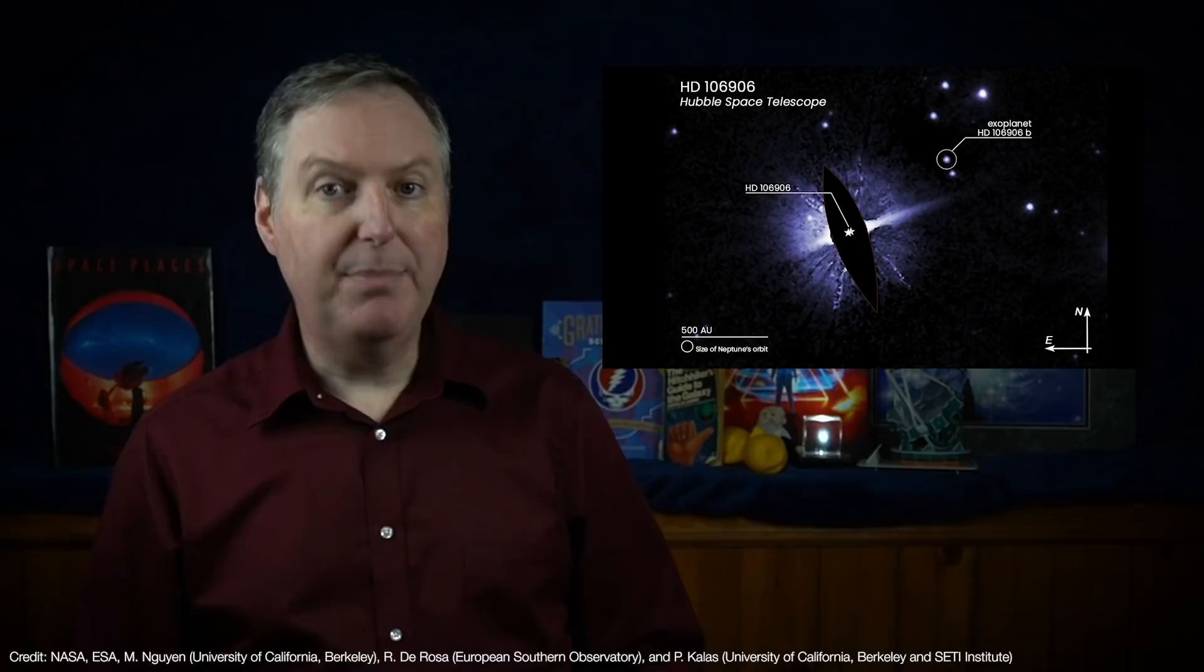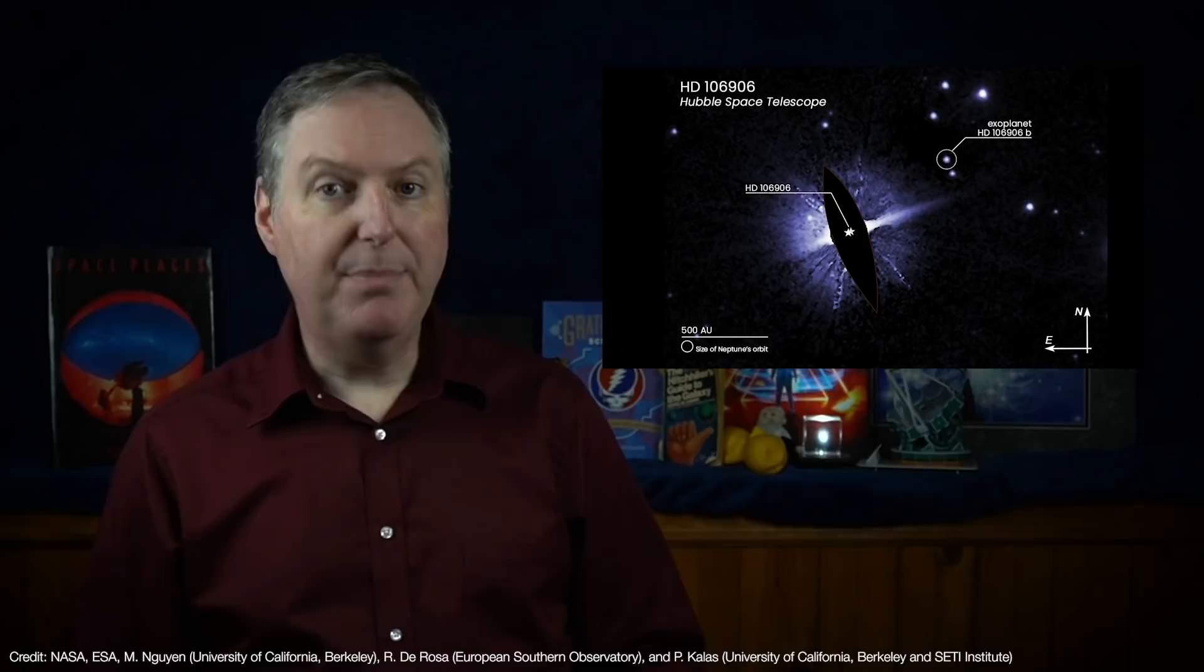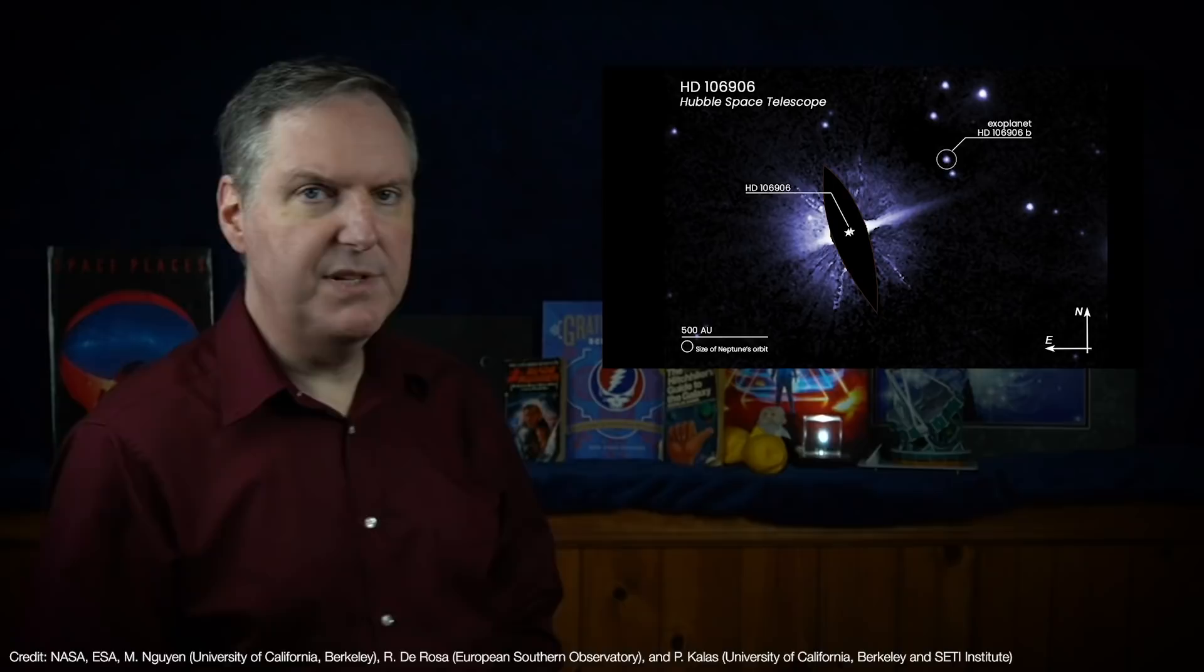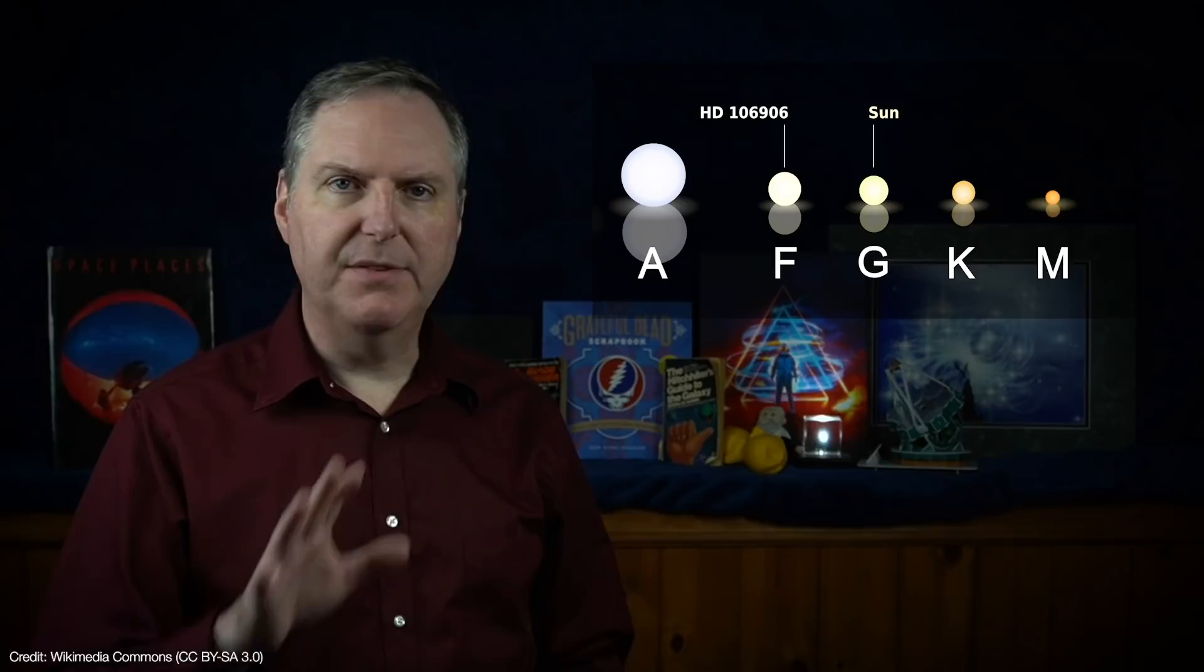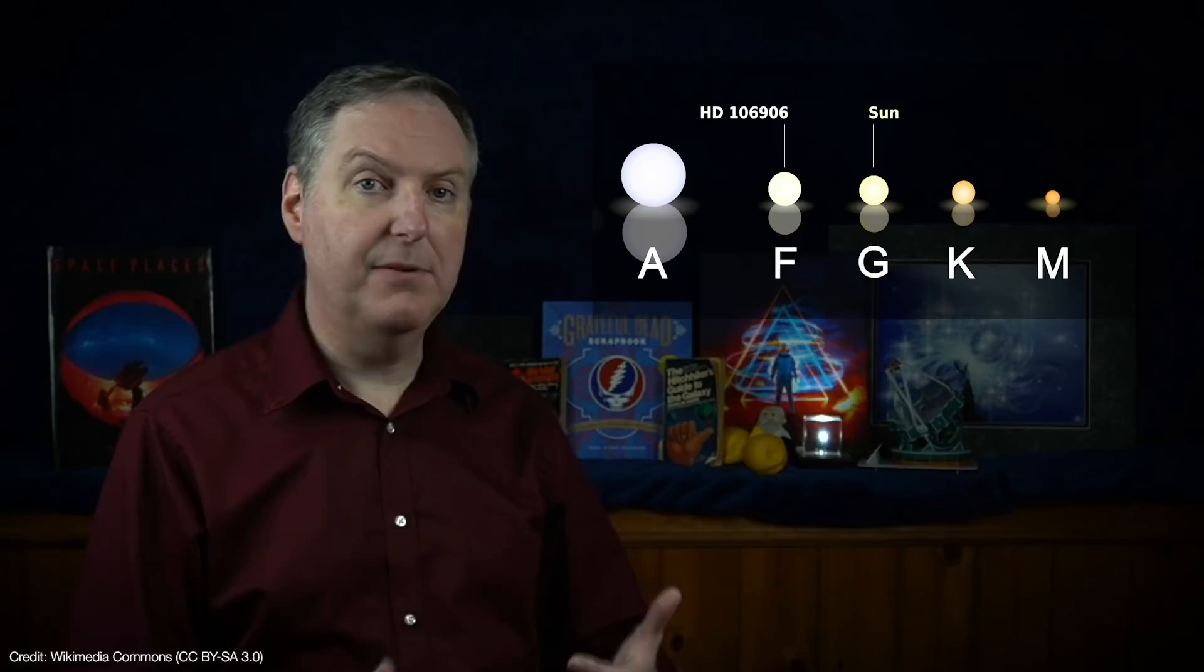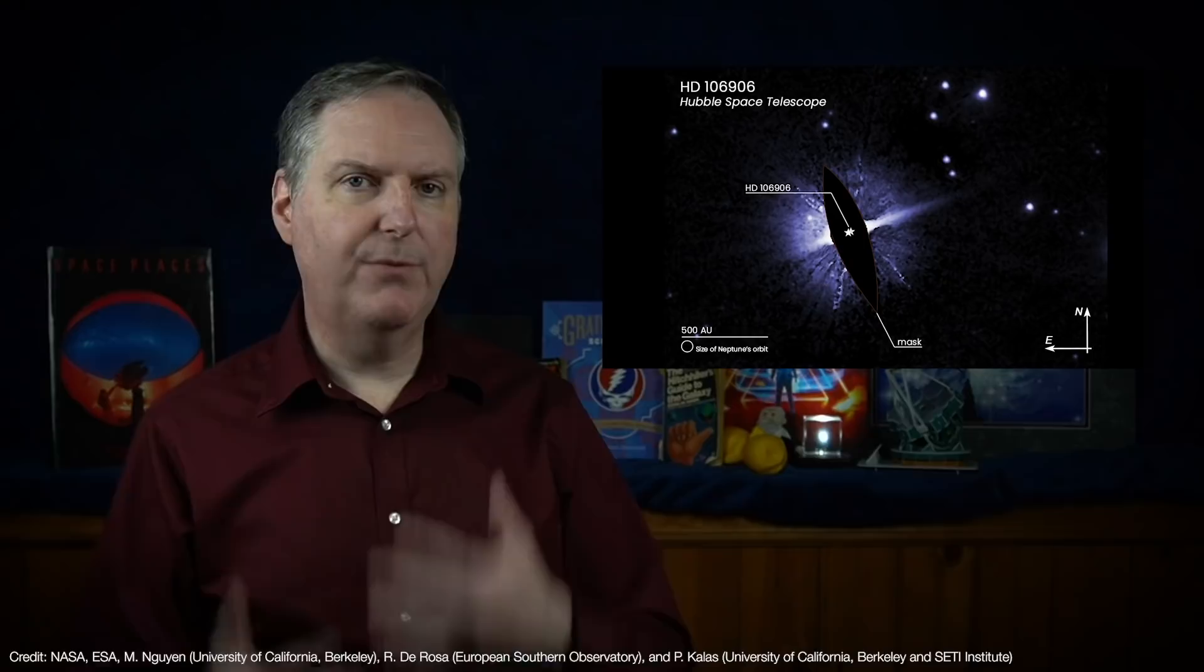HD 109906 is a binary star system about 103 parsecs or 336 light years from the sun. It's part of a larger association of stars between the constellations Centaurus and Crux. The system consists of two stars of spectral type F, which makes each of them a little bit more massive and hotter than the sun. They're very close together and orbit each other once every 49 days. It's also very young at just 15 million years.